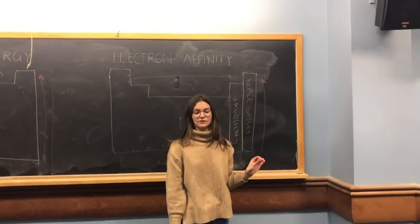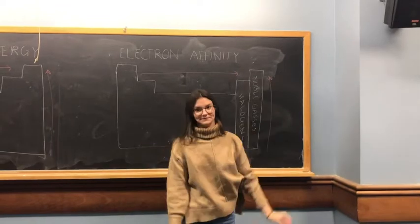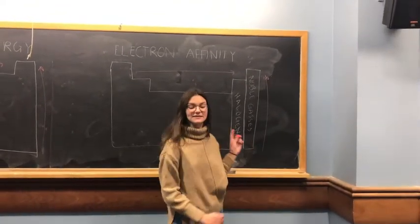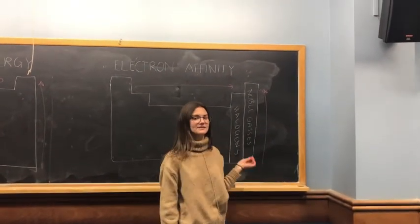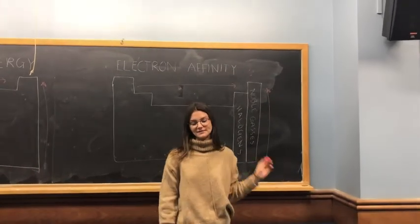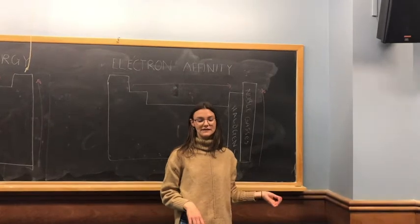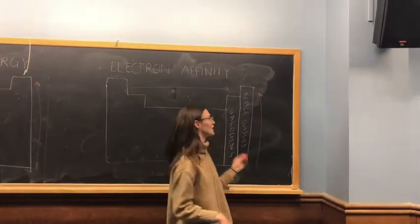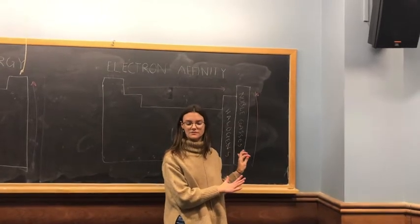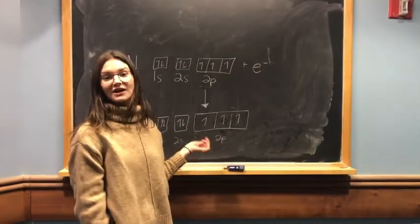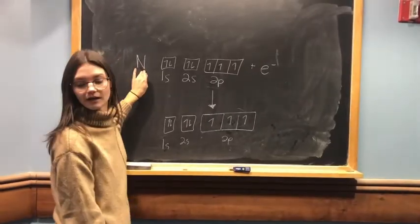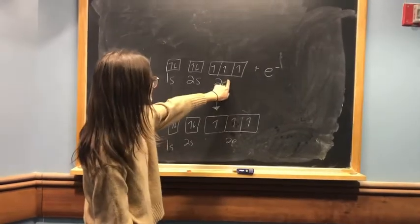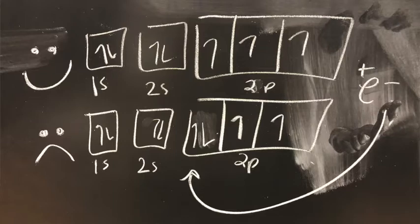Halogens disrupt the trend because of the relatively high Zeff experienced by electrons in their valence shell p orbitals. Energy is released because the anions they form have the same electron configurations as noble gases. Noble gases have positive electron affinity — they need energy to add an electron because they're stable. Beryllium, magnesium, and nitrogen also have positive electron affinity. Nitrogen has a half-filled p orbital, and adding an electron would force pairing in one of those orbitals, which nitrogen resists.